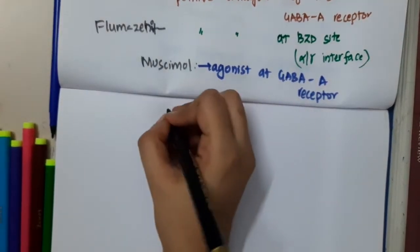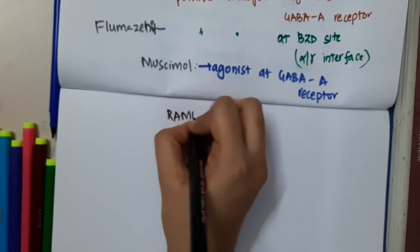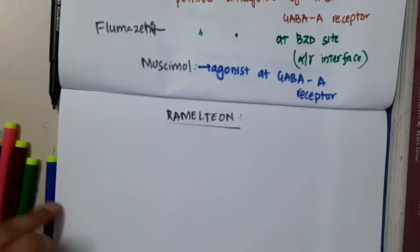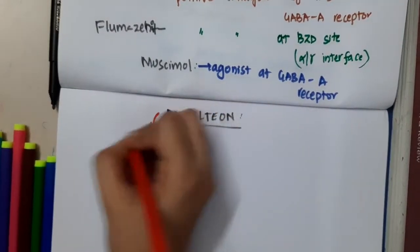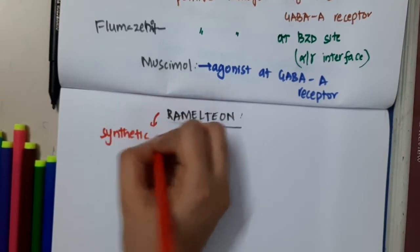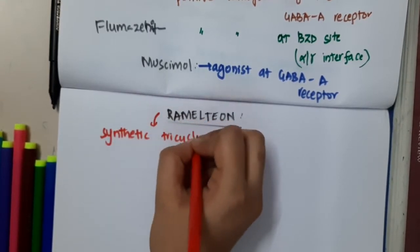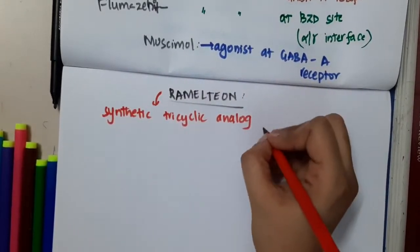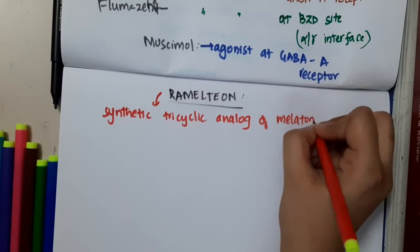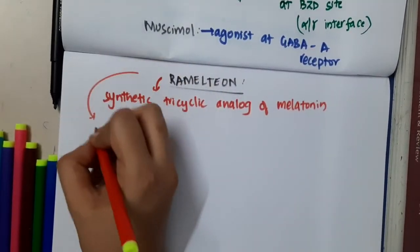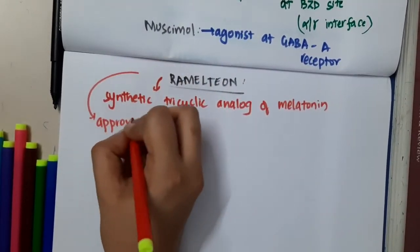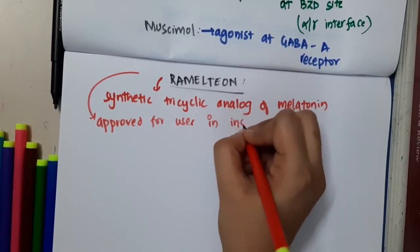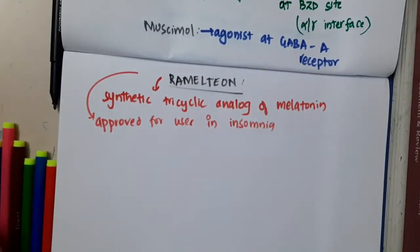Let us now learn some important points about Ramelteon. Ramelteon is a synthetic tricyclic analog of melatonin. It is approved for use in insomnia.